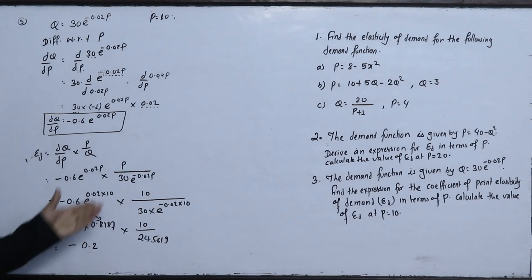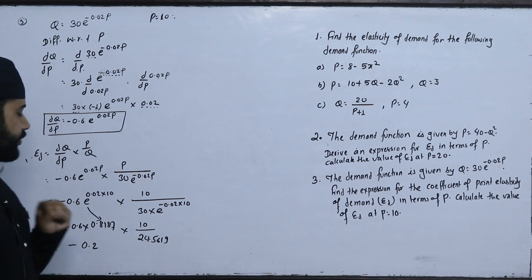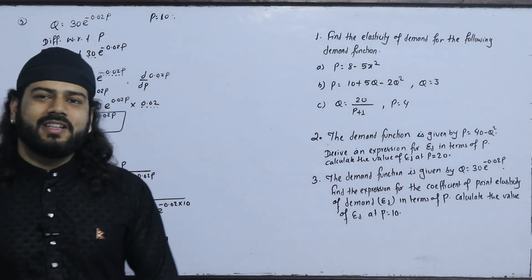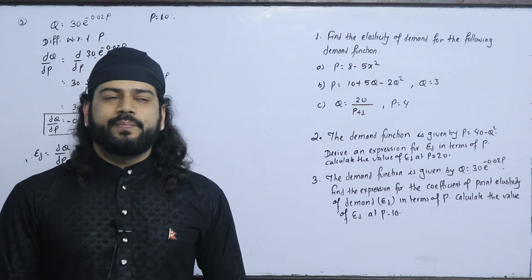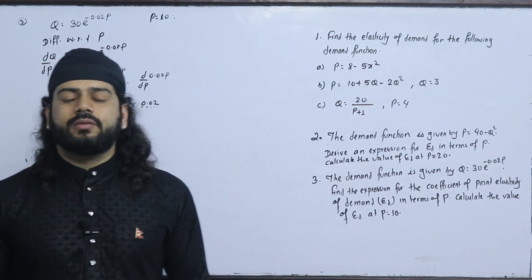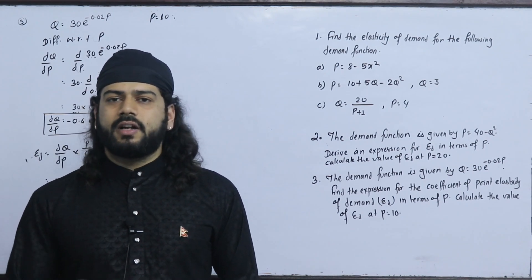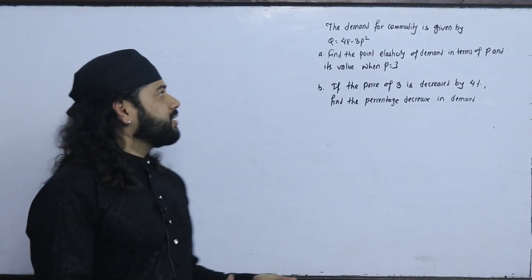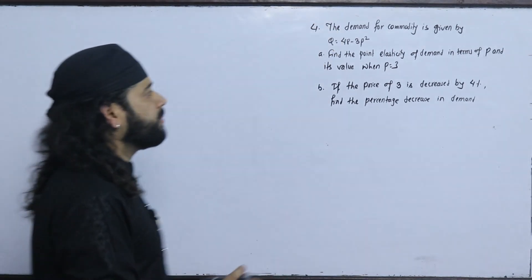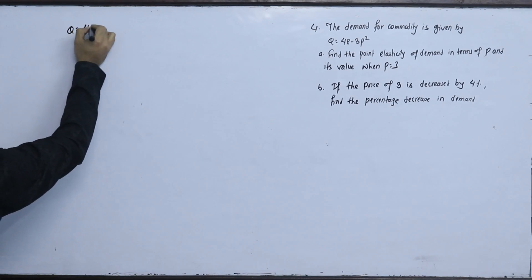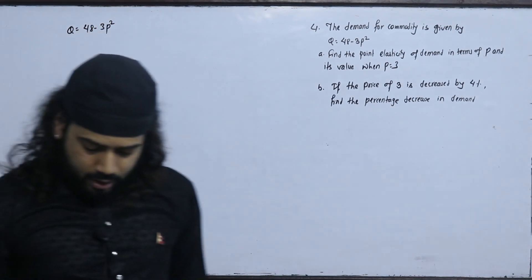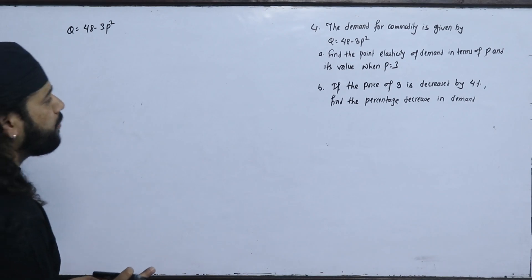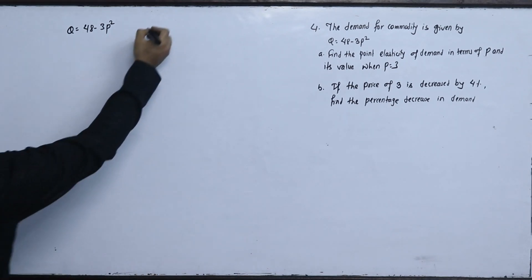We also have topics on increasing and decreasing functions, stationary points, maximization, and minimization in this chapter. The chapter link is provided in the description, so you can see all the topics covered. Now we have question number 4: the demand for a commodity is given by q equals 48 minus 3p squared. Find the point elasticity of demand in terms of p, and its value when p equals 3.